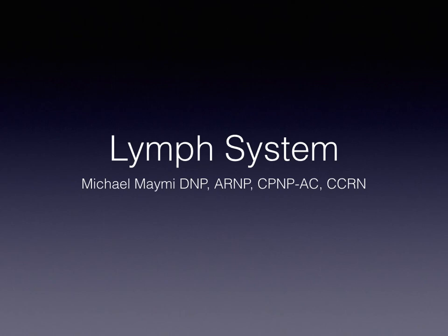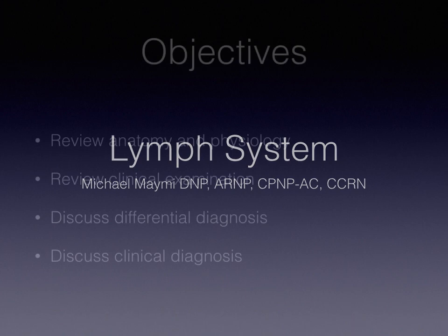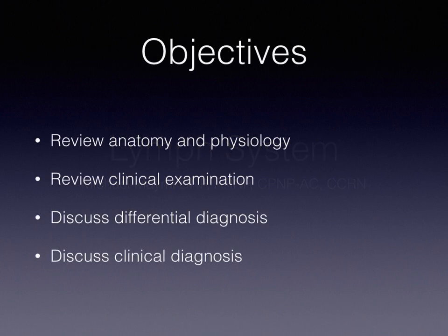Today we're going to talk about the lymph system. We're going to review the anatomy and physiology, discuss clinical examination and differential diagnosis, and the diagnostic tools that we have to make a diagnosis.